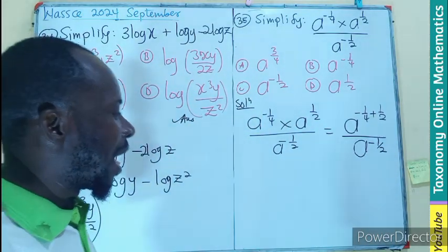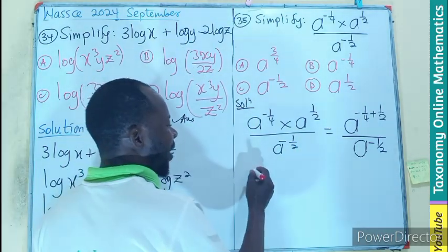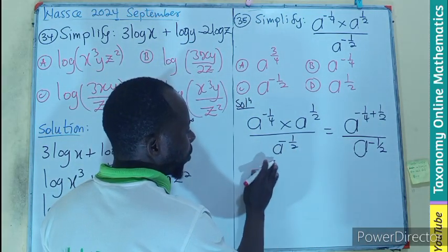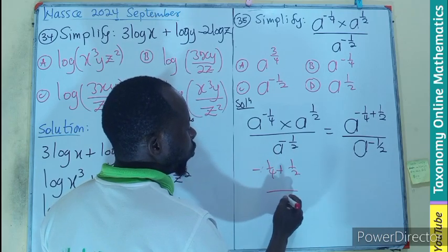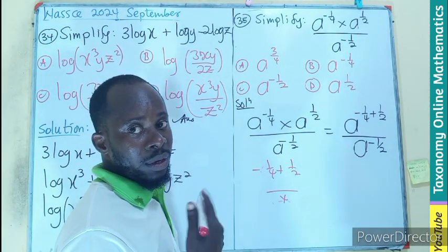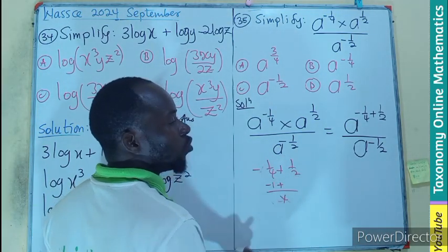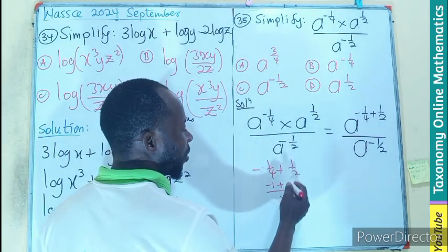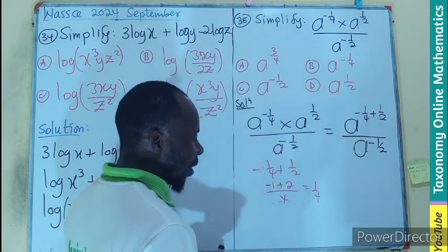Let's look at the numerator in the power. Negative 1 on 4 plus 1 on 2. The LCM is going to be 4 between 4 and 2. 4 into each of 1, so minus 1. 2 goes into 4, 2 times. So we have minus 1 over 4 for our numerator there.